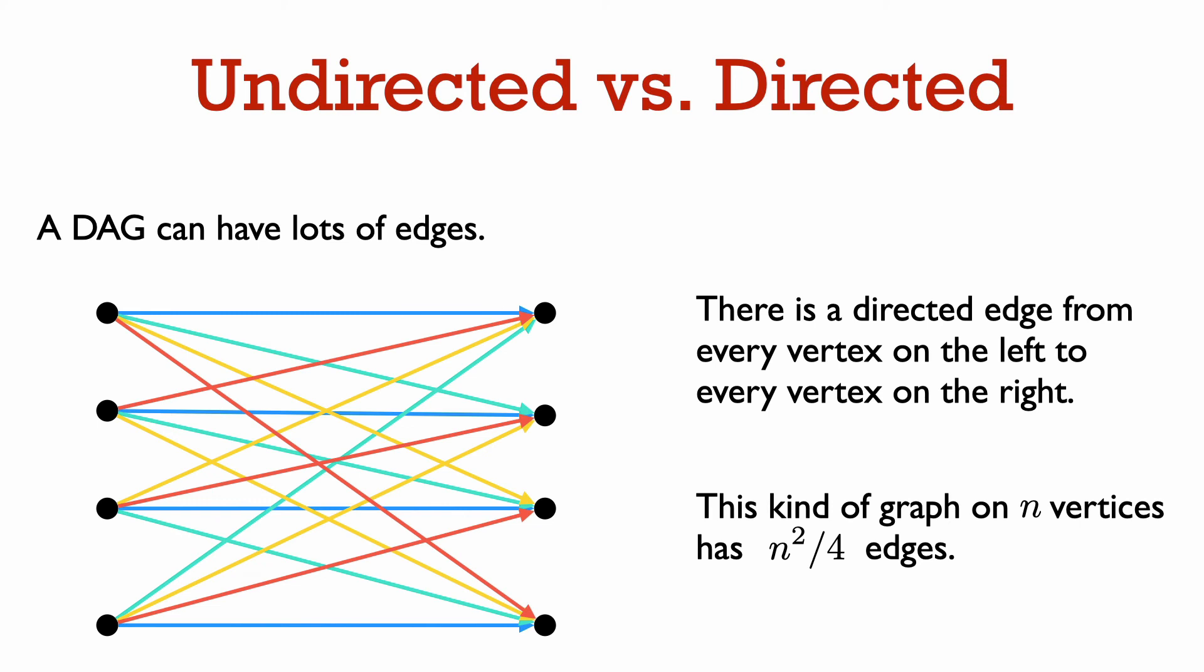The situation is quite different with a DAG. Consider this directed graph here, which has a directed edge from every vertex on the left to every vertex on the right. It has no directed cycle because every edge starts on the left and ends on the right. In general, this kind of graph on n vertices with n over 2 vertices on the left and n over 2 vertices will have n squared over 4 edges, so it can actually be quite dense.